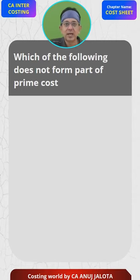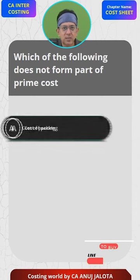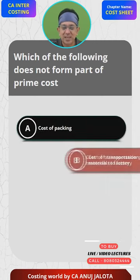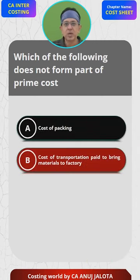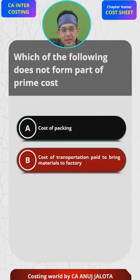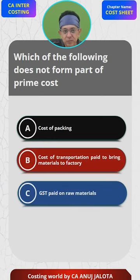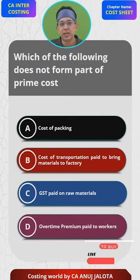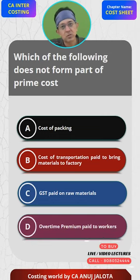Anything that does not form part of these three should be the answer. The four options are: A) cost of packing, B) cost of transportation paid to bring the raw materials to the factory, C) GST paid on raw materials, and D) overtime premium paid to the workers.